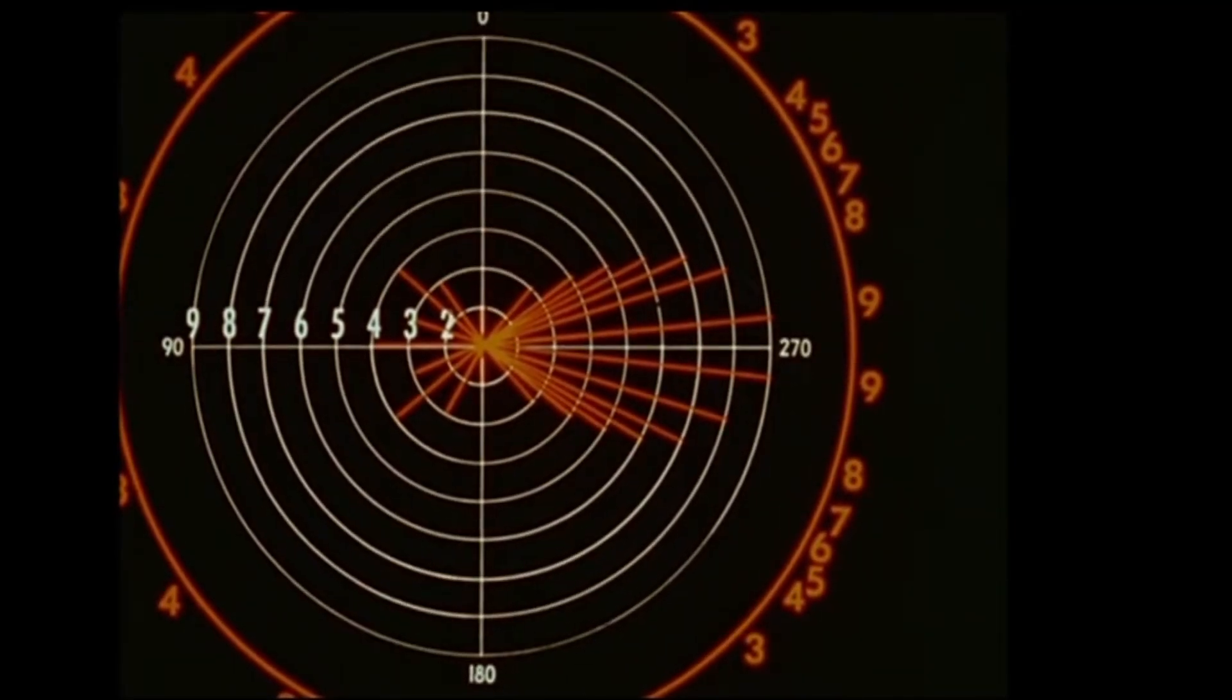Joining the tips of the vectors, we obtain the antenna's polar diagram. The complete polar diagram is three-dimensional, and it enables us to visualize an antenna's radiating characteristics.